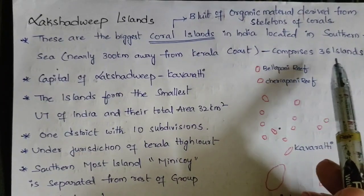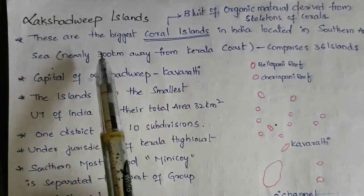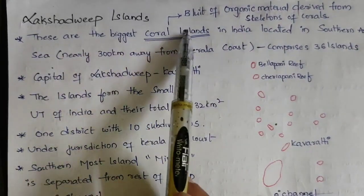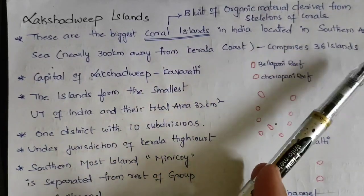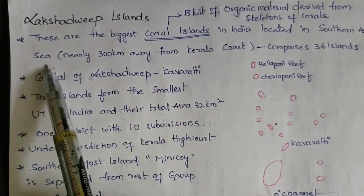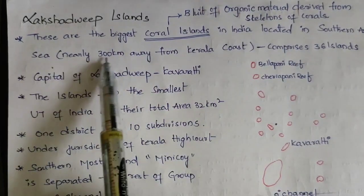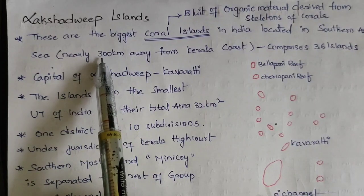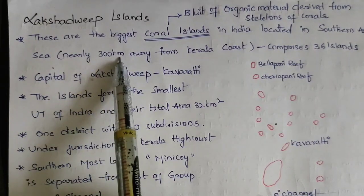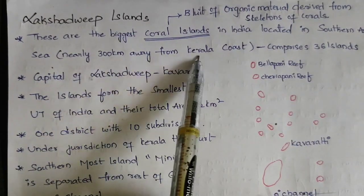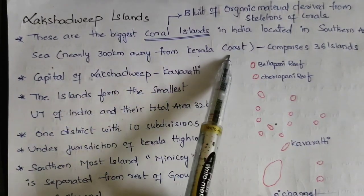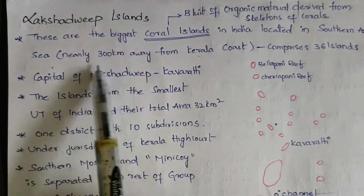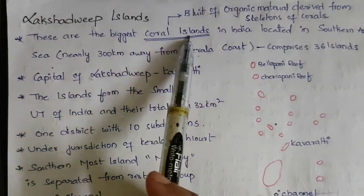Lakshadweep islands are the biggest coral islands in India, located in the Arabian Sea. The Lakshadweep islands are nearly 300 kilometers away from the Kerala coast.